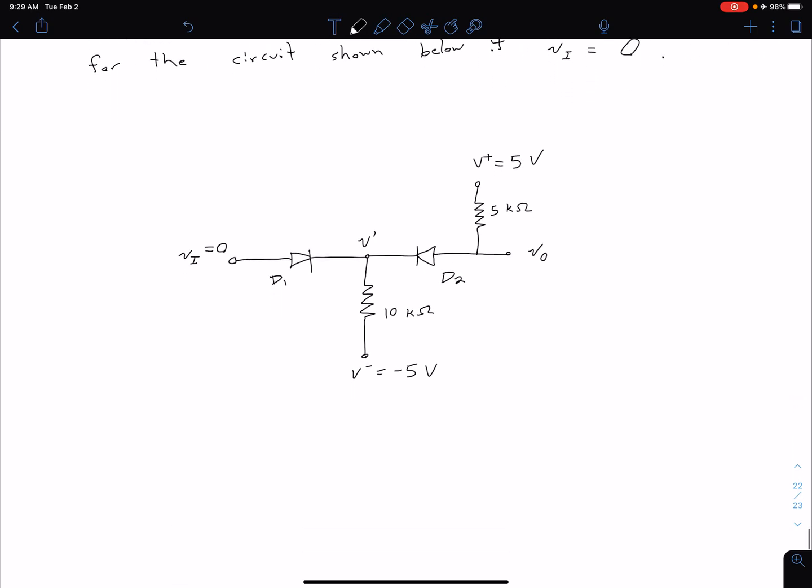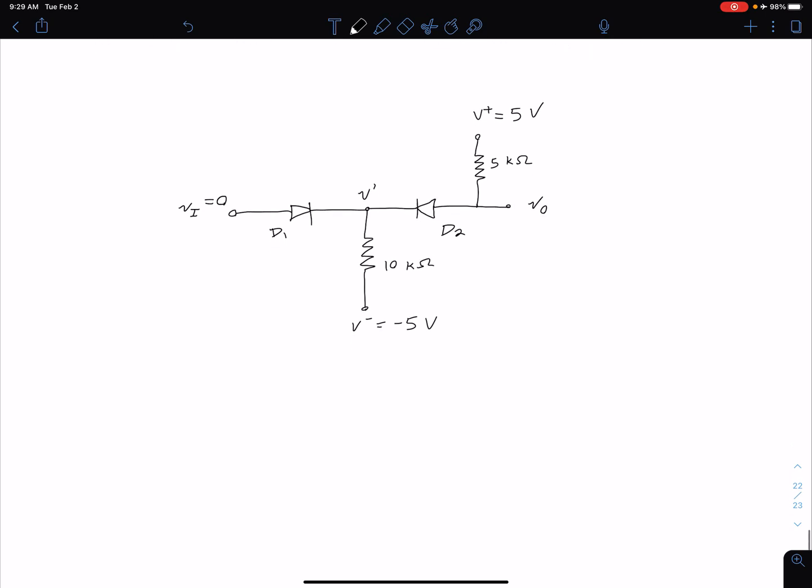So of course in our first step we're assuming diode states but that doesn't necessarily mean it has to be a blind guess. A lot of times, particularly for simpler configurations with only two or three diodes, we can make an educated guess about the diode states.